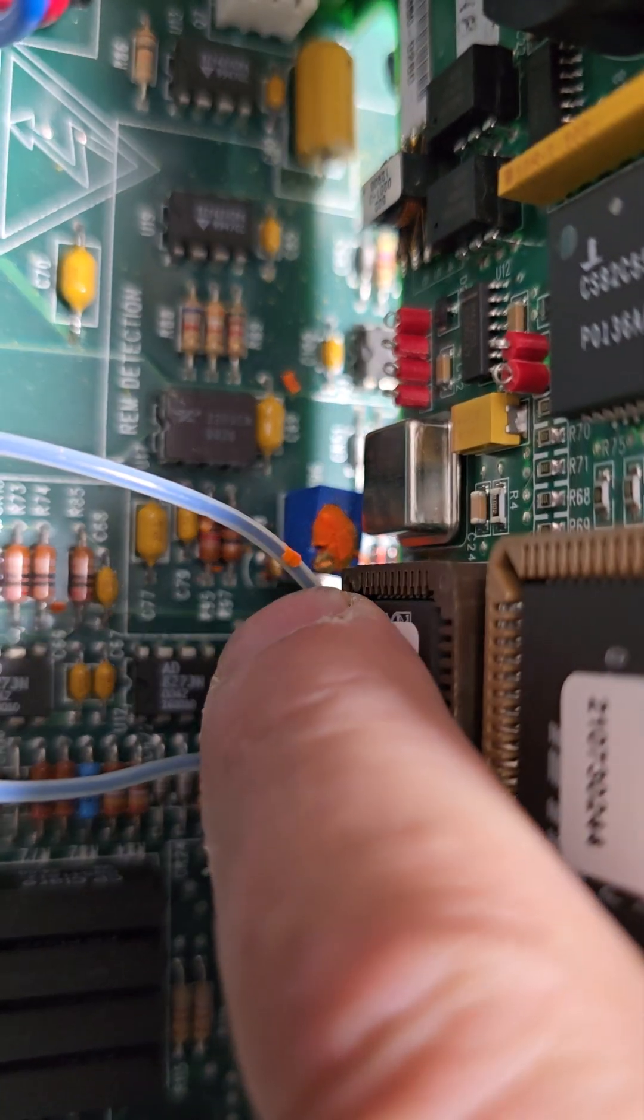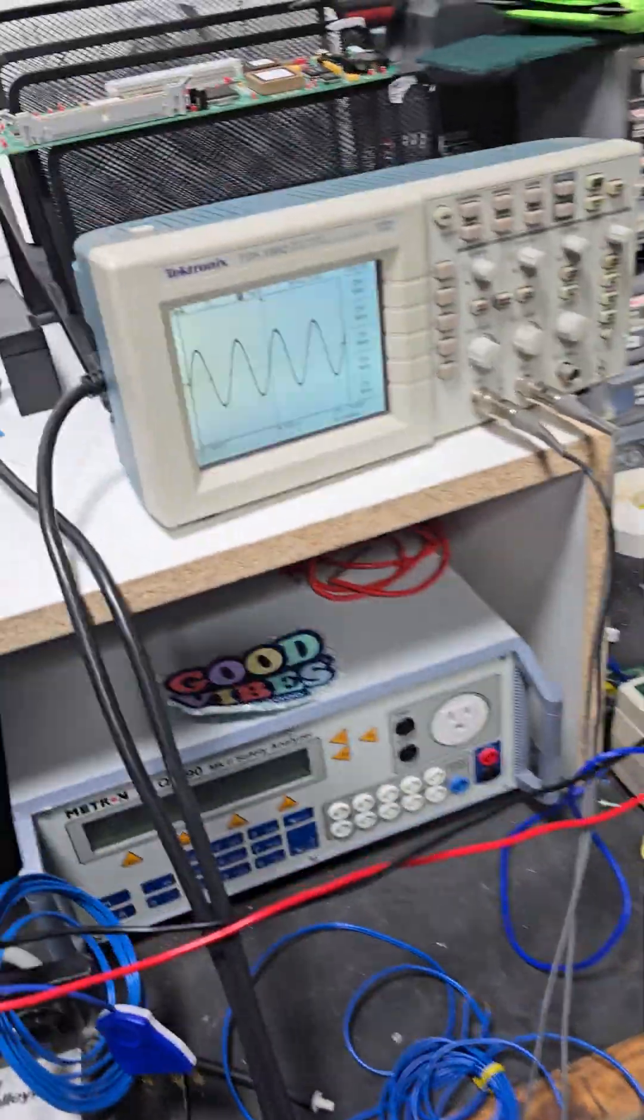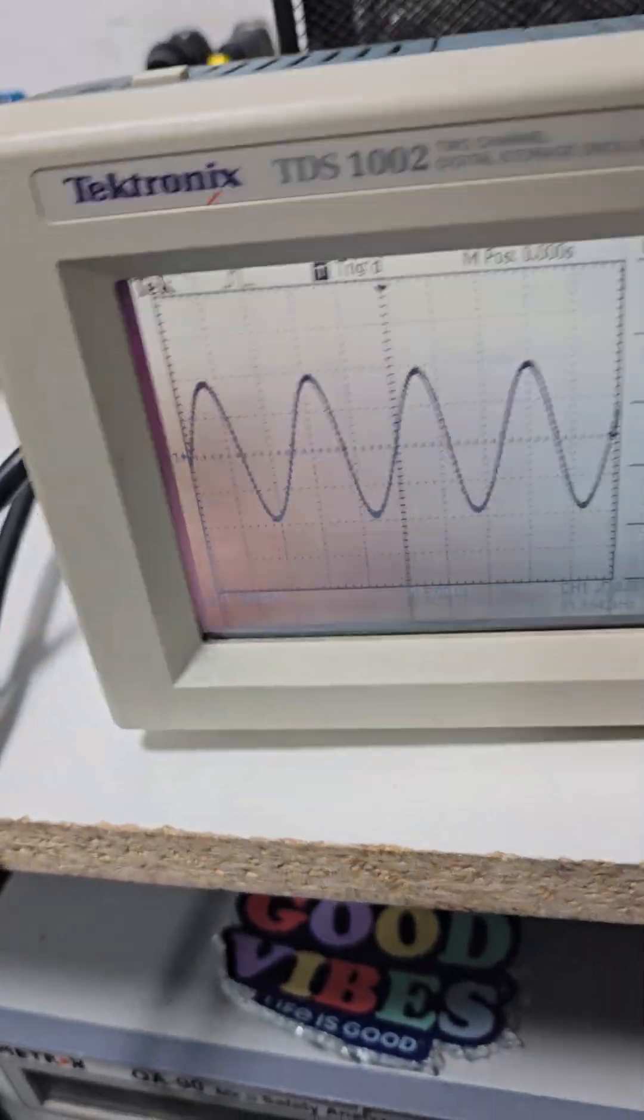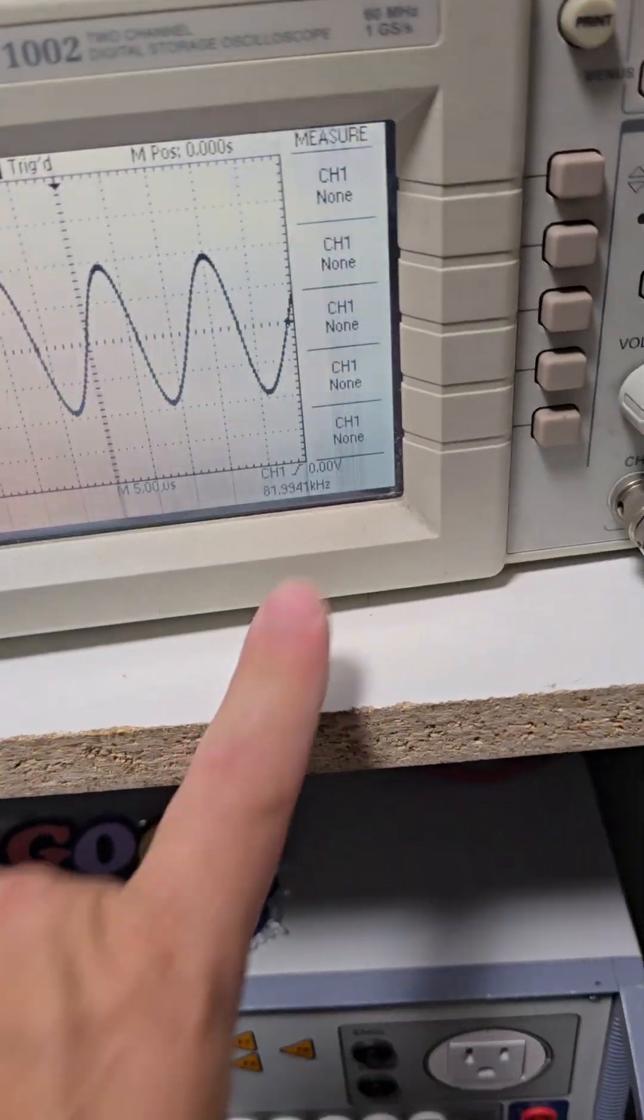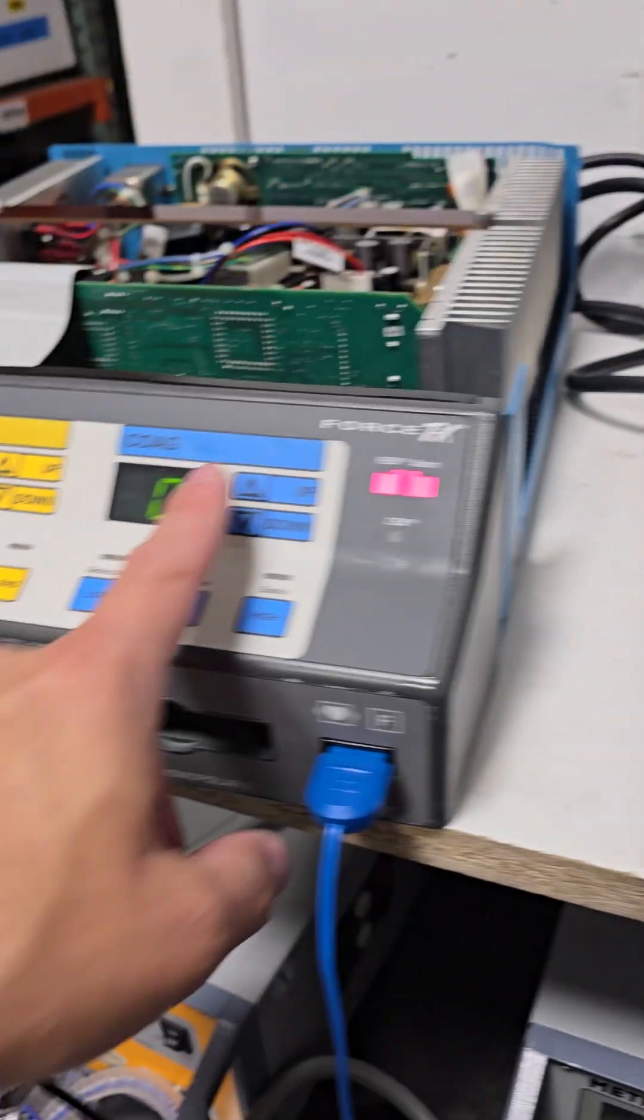You see this little screw right here, you just need a little eyeglass screwdriver to turn it. If you want to go up, turn counterclockwise. If you want your number to go down, it's clockwise. You adjust that until you get to 82 kilohertz or pretty darn close, and then you're good. And we move on to the next test.